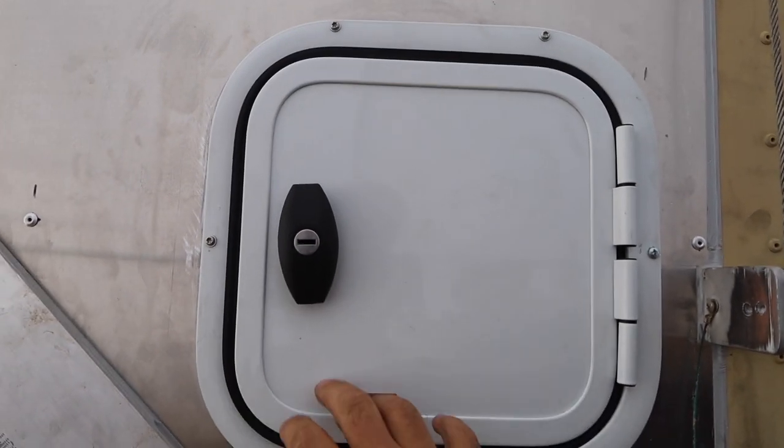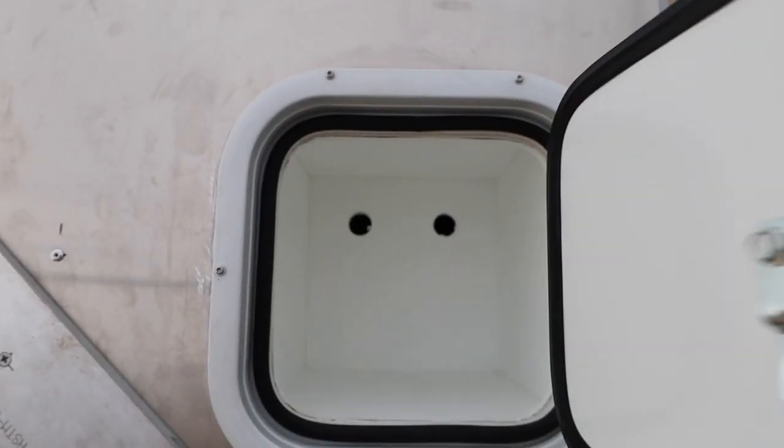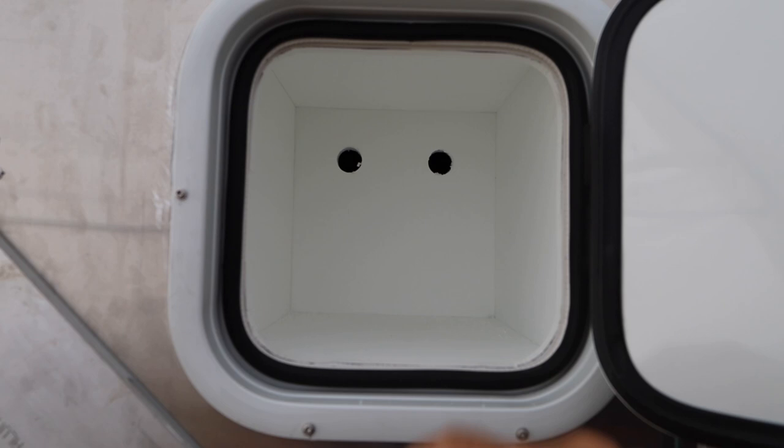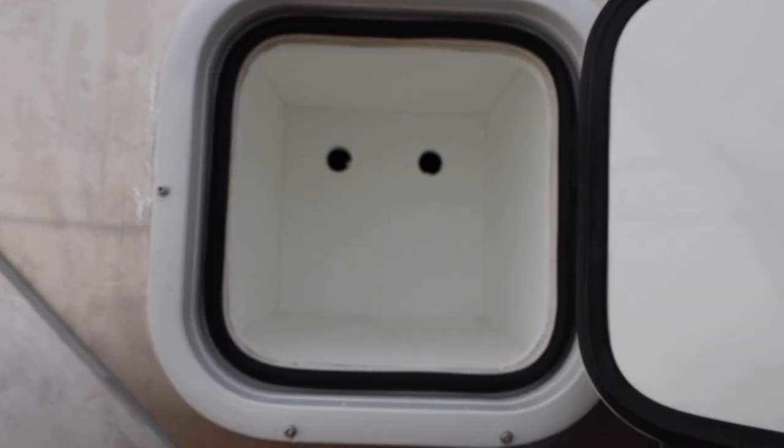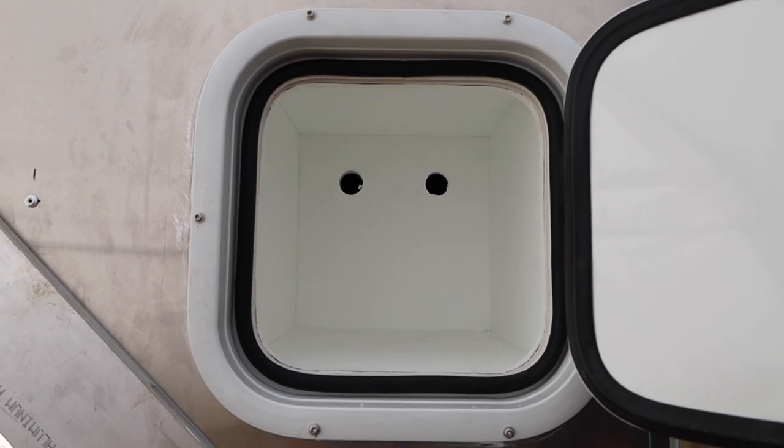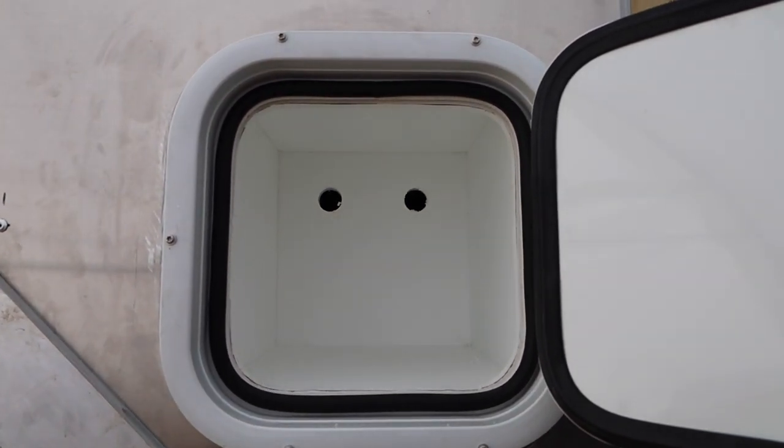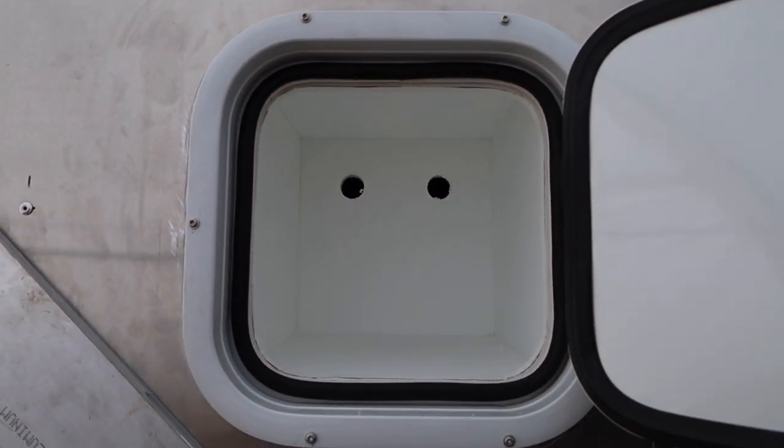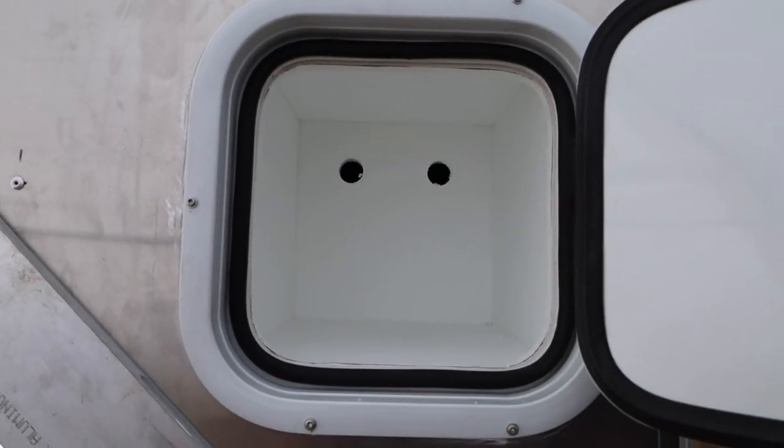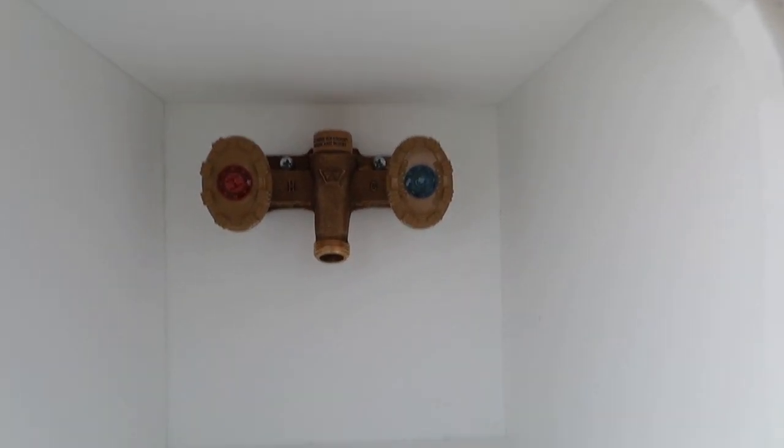This is the box that I've essentially made out of an Arctic Tern door and some starboard, and this is where we're going to house our garden hose as well as the hose bib. Those two holes there is where our hose bib will line up and I will go ahead and get it installed now.